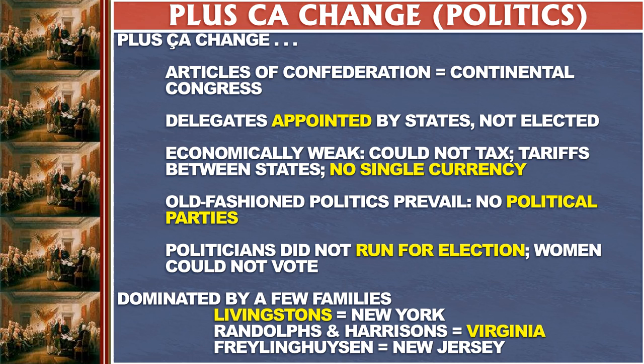The national government was economically weak. It didn't have the power to tax — it had to raise money from the states, essentially asking, 'Would you please give us some money because we need to pay for the army?' And the state could decide to do that or not. There were often tariffs between states that made it difficult to trade across state lines, and each state had its own currency — there was no U.S. dollar.